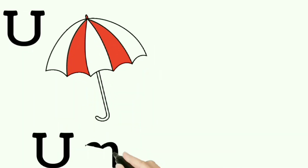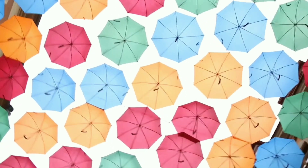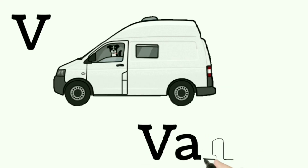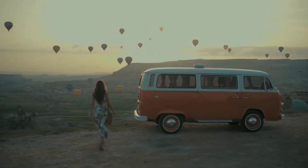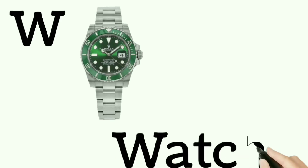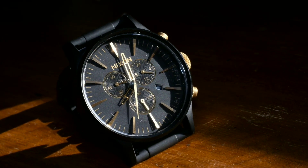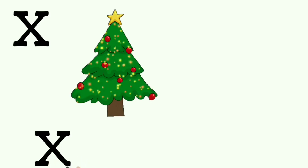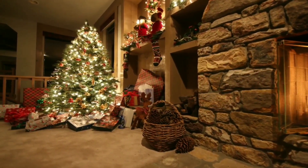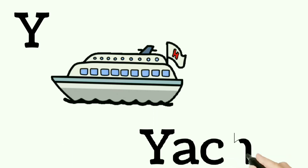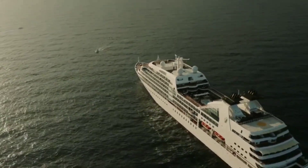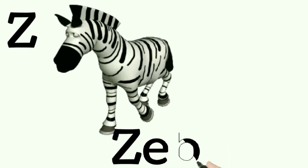U for Umbrella. V for Van. W for Watch. X for X-ray. Y for Yard. Z for Zebra.